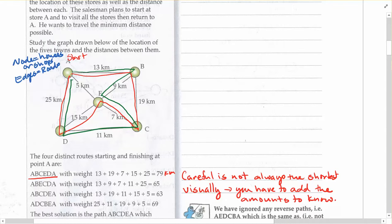So A, B, E, C, D, A, this one here. And if you add them up, you get a total of 65 kilometers. So you can see that is a shorter path, shorter circuit to complete everything.